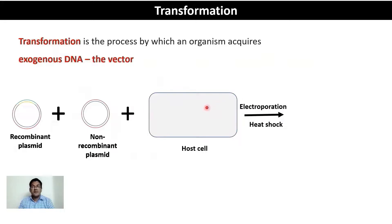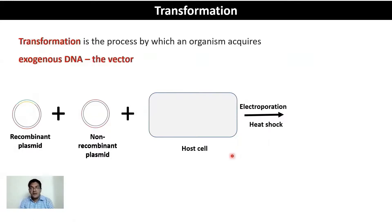Common methods to make the host cell receptive to incoming exogenous DNA include electroporation, where an electric shock makes the membrane permeable to exogenous DNA, and heat shock, where cells are kept at low temperature (0°C) for a long time and then briefly transferred to high temperature (37–43°C), then quickly brought back to 0°C. During this heat shock, cells become more permeable to incoming foreign DNA, which may be a recombinant or non-recombinant plasmid.